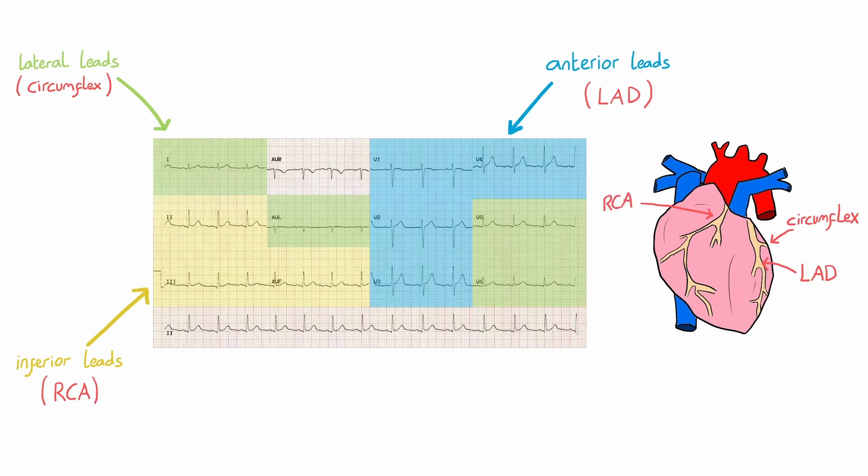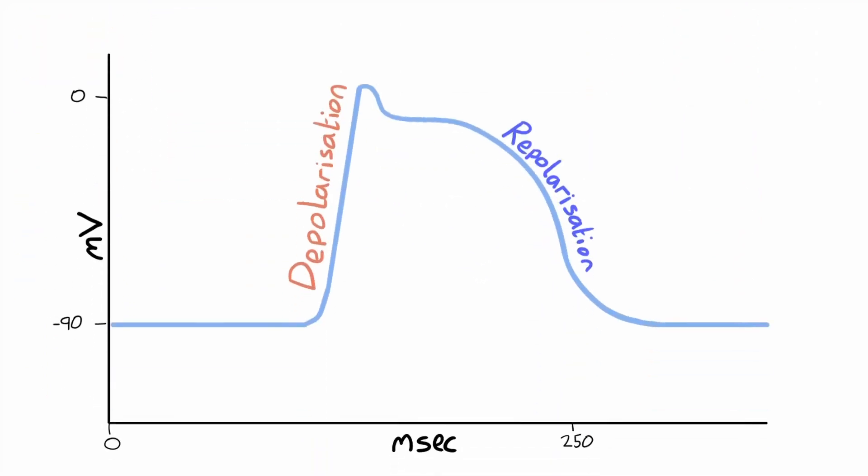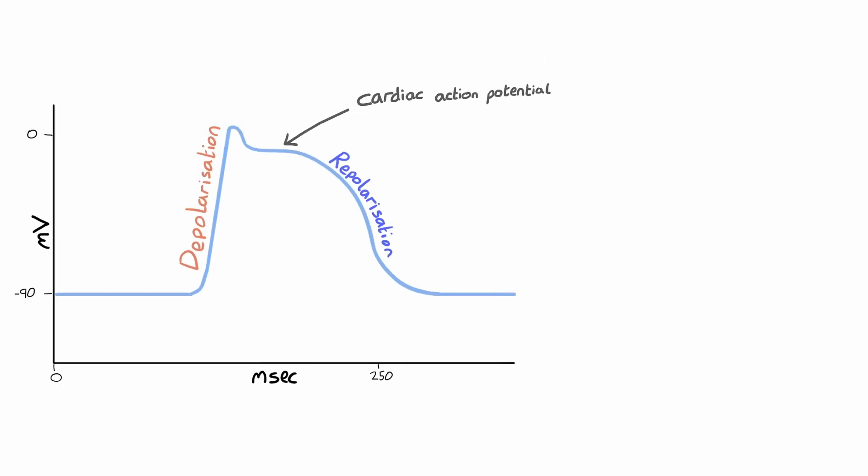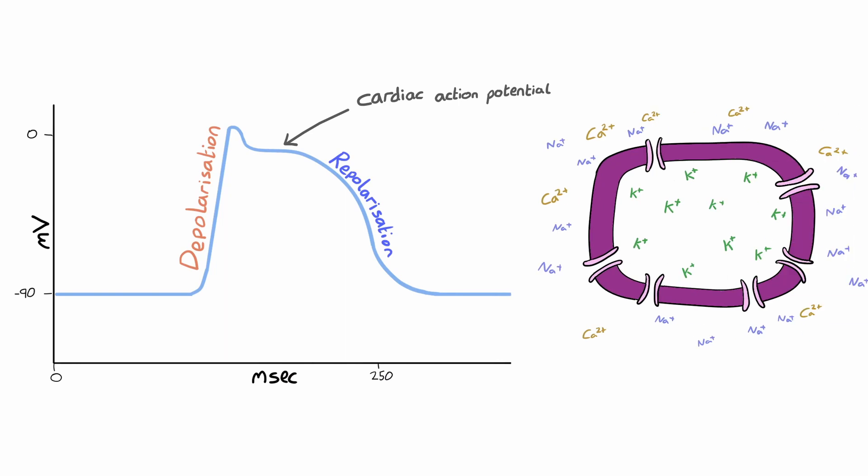Now, to understand the segments of the ECG waveform, it's important to have a basic understanding of the cardiac action potential. Cardiac myocytes rest at minus 90 millivolts with a high concentration of sodium and calcium extracellularly and a high concentration of potassium intracellularly. The difference in ions across the membrane means the myocyte is polarized.